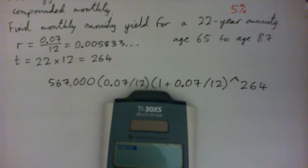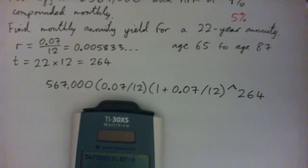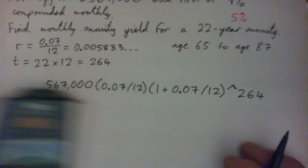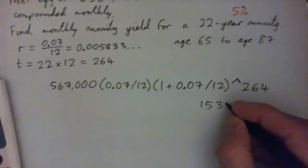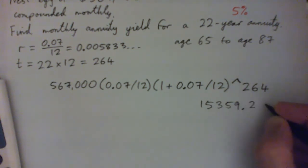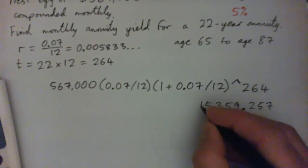567,000 times 1 plus 0.07 over 12 to the power of 264. And that gives me, on the top, 15359.257 about. Okay, so that's what we get at the top of the fraction.